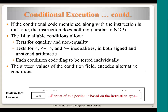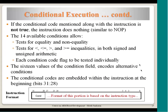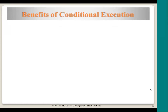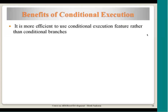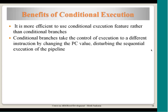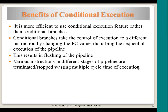Looking in detail at the alternate conditional flags: EQ is Z set, NE is Z clear, and the conditions alternate. Every flag alternates the conditions — that is the way they have ordered it. There is nothing special about it. The benefits of conditional execution: it is better than using conditional branches because branch instructions take control of execution to a different instruction by changing the value of PC, disturbing the execution pipeline, and needing to flush at least 2 instructions which are in the pipeline. Remember, ARM 7 has a 3-stage pipeline.